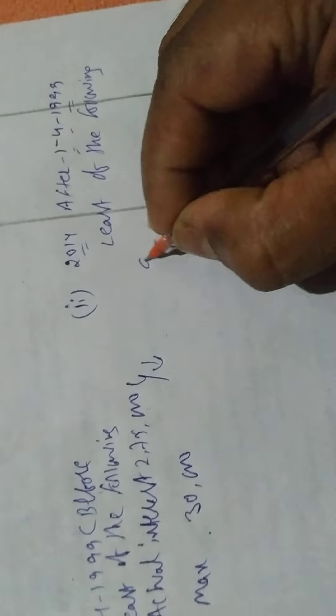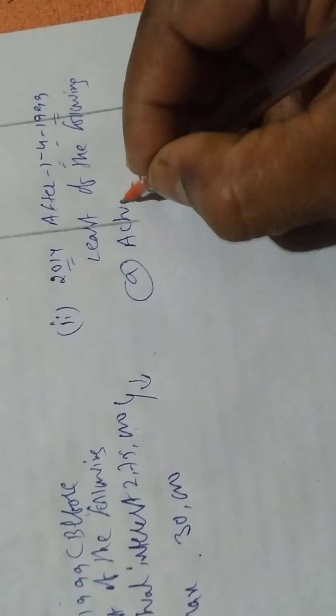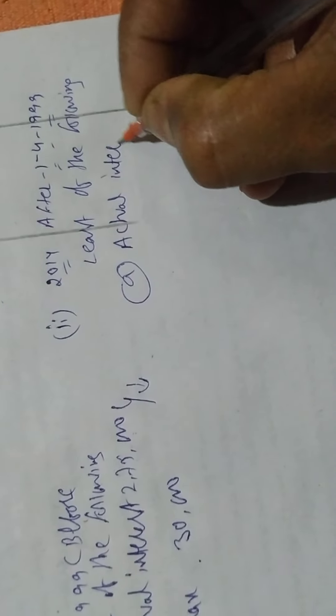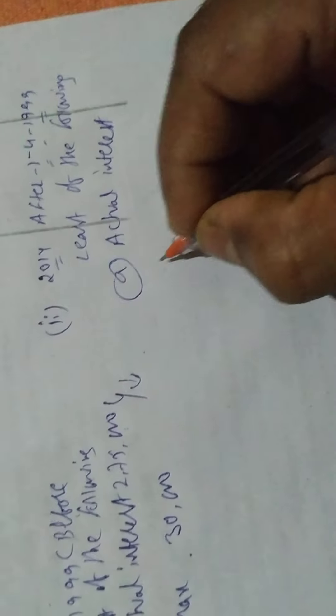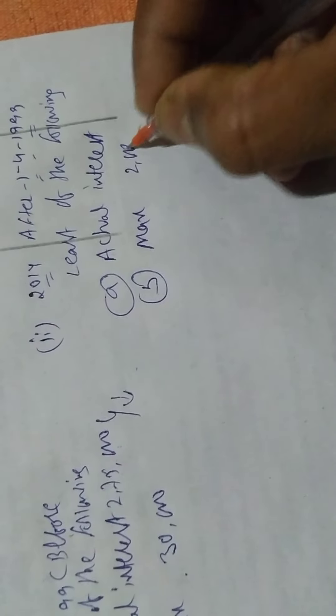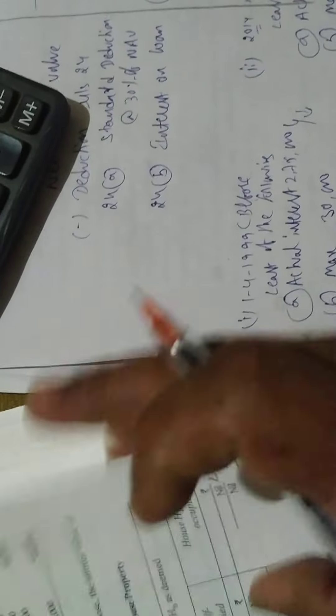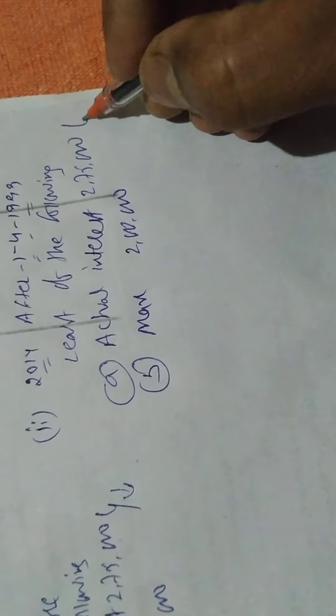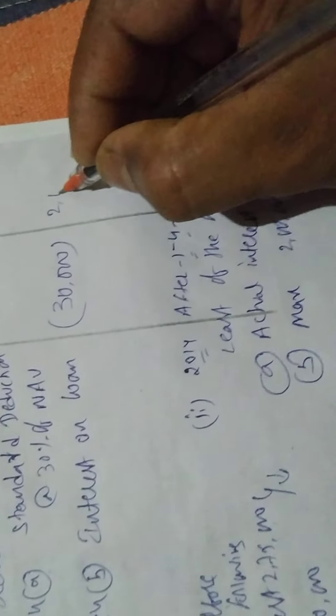For loans taken after 1/4/1999: actual interest is 2,75,000 and the maximum allowed is 2,00,000. Least of the two is 2,00,000, so 2,00,000 will be taken as deduction.